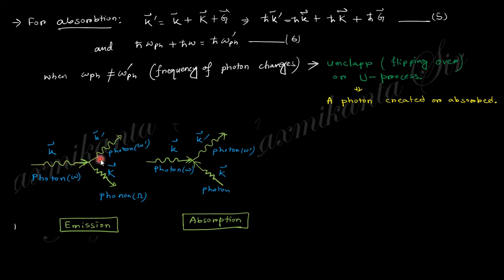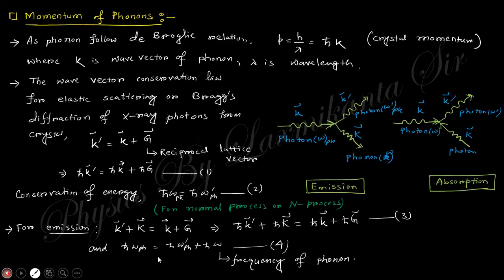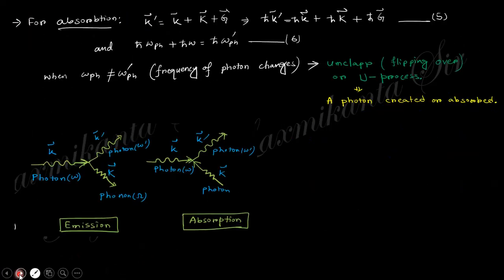In these inelastic collision cases, the frequencies of the incoming and outgoing photons are not equal — that is, the energies are not equal — meaning some energy is converted into the phonon. This process, where a phonon is created or absorbed — also called 'flipping over' or the Umklapp process — is known as the U-process. The previous case, with no phonon exchange, is called the N-process or normal process.